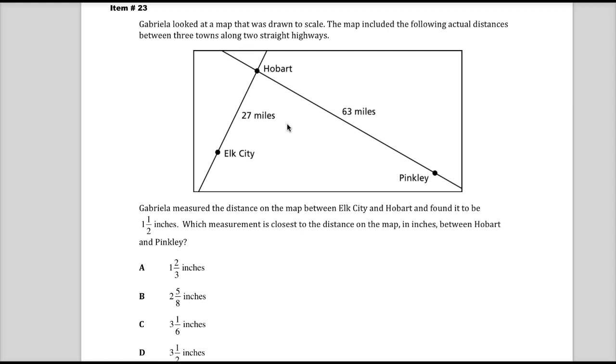So with that said, Gabriella measured the distance on the map between Elk City and Hobart and found it to be one and a half inches. So I'm going to make a note of that on the map because I can write on the test. Why wouldn't I? So she says that from here to here is one and a half inches. Which measurement is closest to the distance on the map in inches between Hobart and Pinkley? And this is what I want to know about. My question area is from here to here.